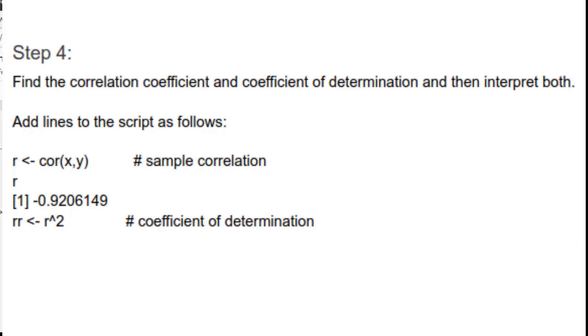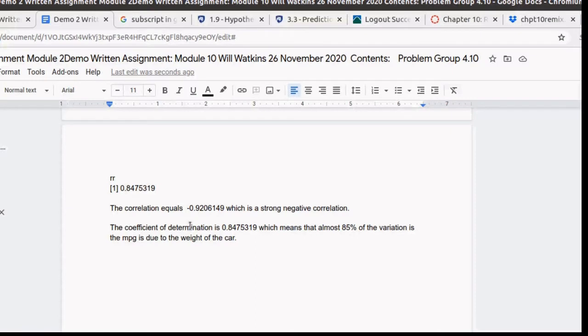So the correlation equals a negative 0.926149, which means that there's a strong negative correlation. That the slope of the line is negative and that the points are close to the line. The coefficient of determination is 0.8475319, which means that almost 85% of the variation in the miles per gallon is due to the weight of the car.